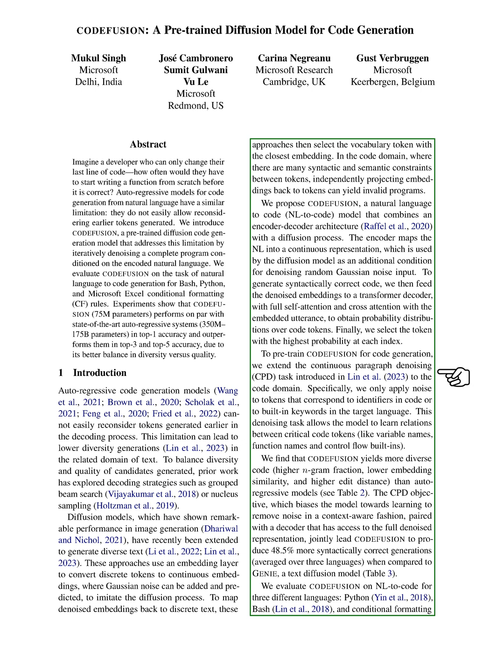Our system works as follows. The encoder maps the natural language into a continuous representation, which the diffusion model uses as an additional condition for denoising random Gaussian noise input.